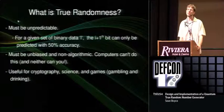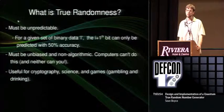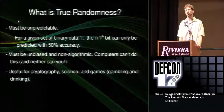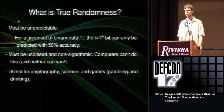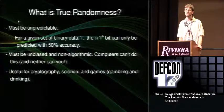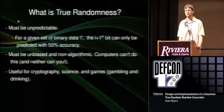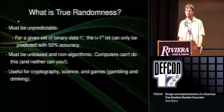The take-home lesson is that true random data is unpredictable. If you have any amount of true random data, an arbitrary amount of processing power and time, and perfect knowledge of how it was generated, you cannot predict the next bit with better than chance. To meet this gold standard, your data has to be unbiased and not produced by an algorithm.